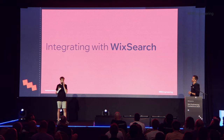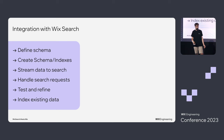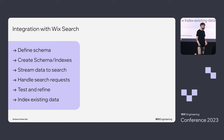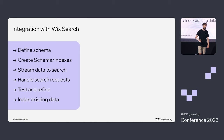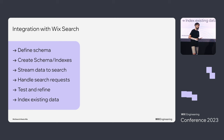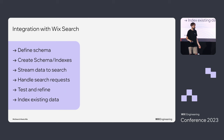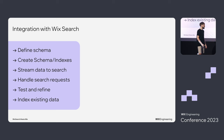Integrating with Wix Search, you only need to do a few things. Define a schema. Create the index. Take care of your change capture and stream data to search. Write the code that queries search over gRPC. Once you have those parts, you usually go through a refinement stage — find what's not working, change it so the solution works well. Then you just migrate all your data to search and release to everyone.